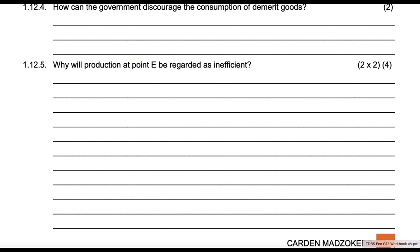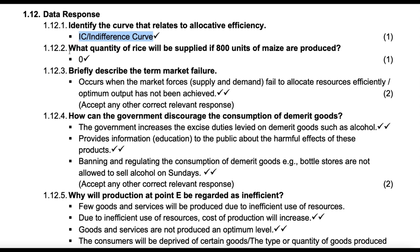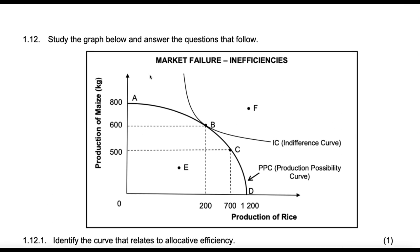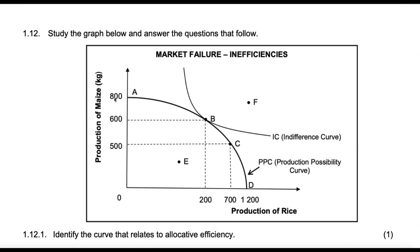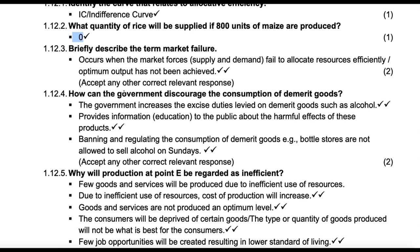Let's look at the responses. Number one, it is an indifference curve. Number two, zero — if we produce 800 cages of maize, we are going to produce no rice. Then number three, briefly describe the term market failure: failure of markets to allocate resources at an optimum level.